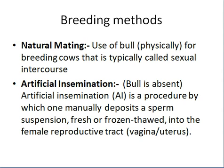The second method is artificial insemination. In this method, the bull is absent. We artificially obtain sperm or semen from a bull, and then artificially deposit this semen or sperm suspension — either as fresh or frozen — into the female reproductive tract.